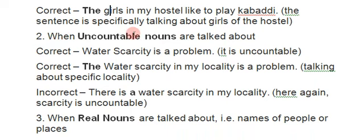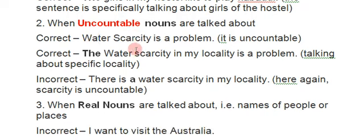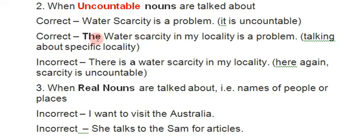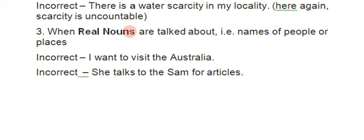Second: when uncountable nouns are talked about, we do not use articles. For example: 'Water scarcity is a problem' — 'water scarcity' is uncountable, so no article. 'The water scarcity in my locality' is also correct because here we are talking about a specific locality. But 'There is a water scarcity in my locality' is wrong, because 'a' cannot be used with uncountable nouns.